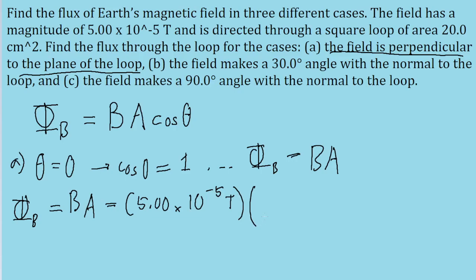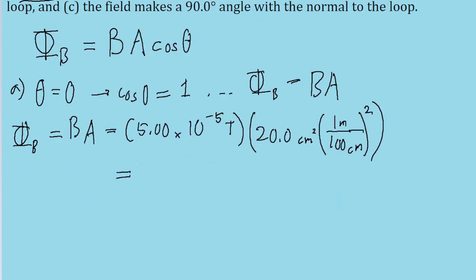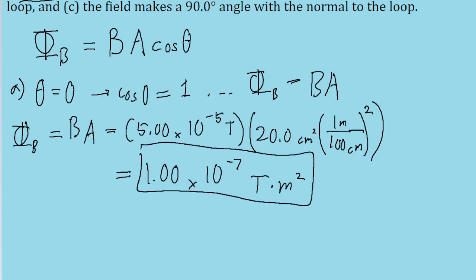The surface area of the loop is given as 20.0 squared centimeters. In order to keep our units consistent, we're going to convert this from centimeters squared to meters squared by applying a chain link conversion — in one meter there are 100 centimeters, and this gets squared because we're working with squared units. If we put this into a calculator, we find that the flux is about 1.00 times 10 to the power of negative 7 tesla meters squared. That is the answer to Part A.